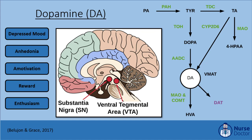Tyrosine can also be converted into tyramine (TA) under the influence of tyrosine decarboxylase (TDC). Tyramine is then broken down into 4-hydroxyphenylacetaldehyde (4-HPAA) by monoamine oxidase, or converted into dopamine under the influence of the cytochrome P450 2D6 system. This reaction becomes important when considering the mechanism of action and side effect profile of monoamine oxidase inhibitors (MAOIs).